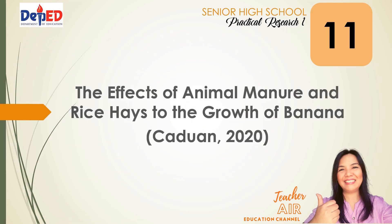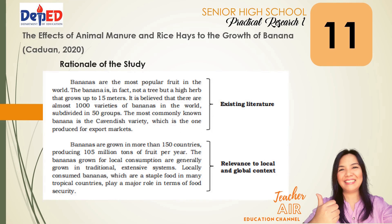Here's another sample rationale of the study for you to have a simpler idea on how to make one. It is labeled with the components you need to include in justifying the reasons for conducting your proposed study. You can use this as a guide in composing your write-up. The title is 'Effects of Animal Manure and Rice Hays to the Growth of Banana' by Kaduan, 2020. The first paragraph includes write-ups on existing literature. Bananas are the most popular fruit in the world. The banana is, in fact, not a tree, but a high herb that grows up to 15 meters. It is believed that there are almost 1,000 varieties of bananas in the world, subdivided into 50 groups. The most commonly known banana is the Cavendish variety, which is the one produced for export markets.